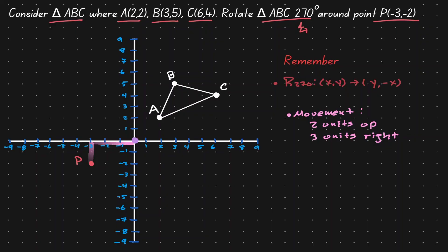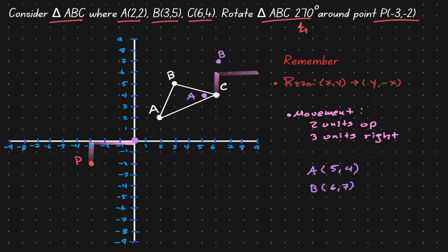For point A, let's move it two units up and three units to the right, giving us the new location for A. Now let's give that same movement to B — two units up, three units to the right — so our new location for B is found. Let's give that same movement to C — two units up and three units to the right — giving us the new location for C.